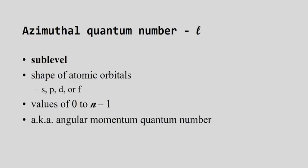The second quantum number is the azimuthal number, given by the letter L. This just tells us what sub-level we're dealing with — the shape of the atomic orbital: S, P, D, or F. The values we give to L are zero up to N minus one. There are only four possible sub-shells, so it's really zero through three; we haven't identified any G sub-shells in actual atoms.